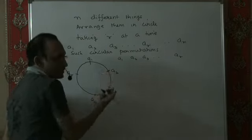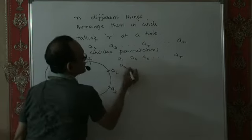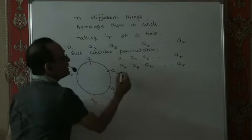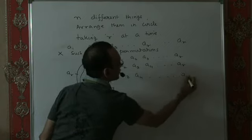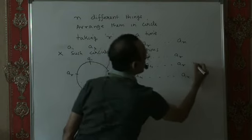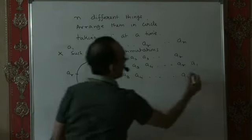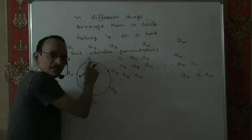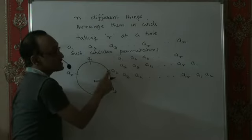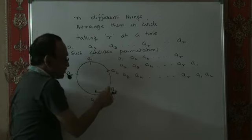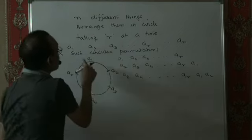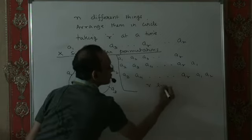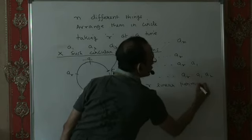Or I could have cut the circle at a2 and I would have got a linear arrangement a2, a3, a4, aR, a1. I could have cut the circle at a3 and I would have got another linear arrangement a3, a4, aR, a1, a2, and so on. So I could have cut the circle at a1, a2, a3, a4, aR — that means for every one of these x circular permutations I would have got R linear permutations.